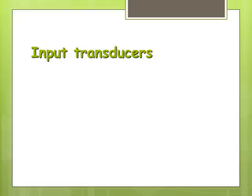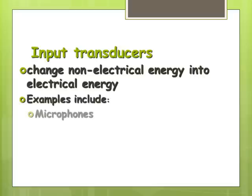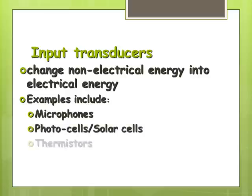We have two types of transducers. We have an input transducer and an output transducer. Basically they change non-electrical energy into electrical energy. That's an input transducer. So an example of such things would be a microphone, a solar cell or a photo cell and a thermistor.